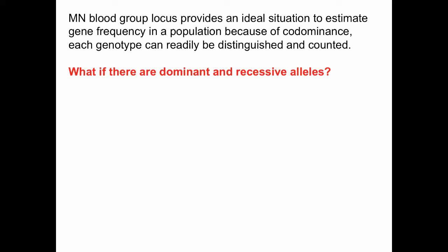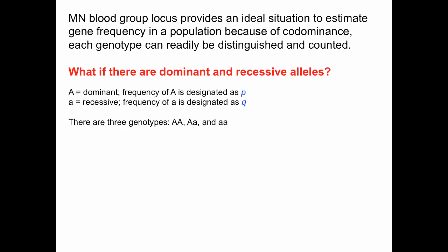The MN blood group locus provides an ideal situation to estimate gene frequency in a population because of codominance — each genotype can be readily distinguished and counted. How would we calculate these frequencies if we had dominant and recessive alleles? Assume big A is dominant with frequency P, and little a is recessive with frequency Q.